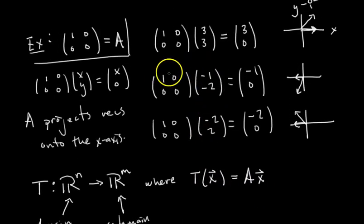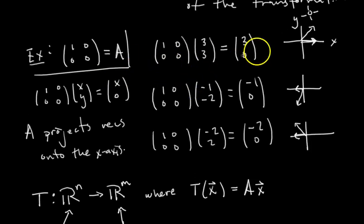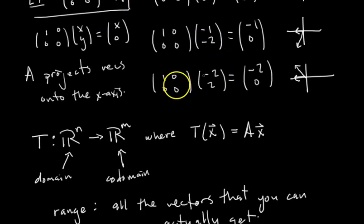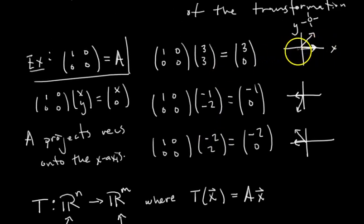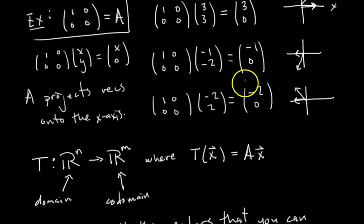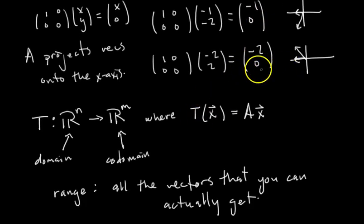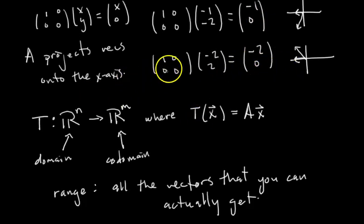What does that mean? So for example, up here when we had this matrix A that projects vectors onto the X-axis, the domain is all of R^2. The codomain is also all of R^2 because the codomain is just the dimension that your output vectors live in. And then the range is just the X-axis because you can only get vectors on the X-axis if the transformation is projecting onto the X-axis. And so you say the range is the X-axis. The codomain and the domain are equal. They're both R^2.